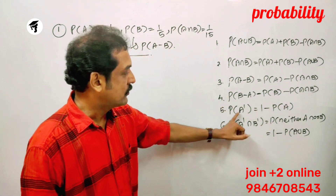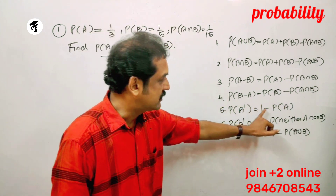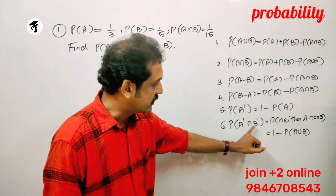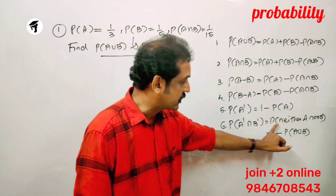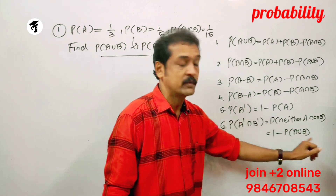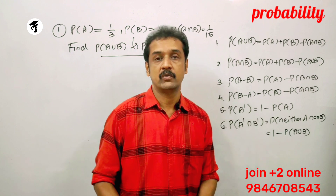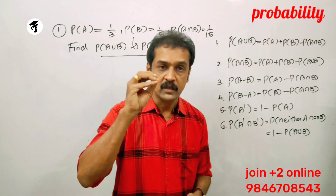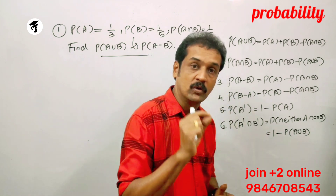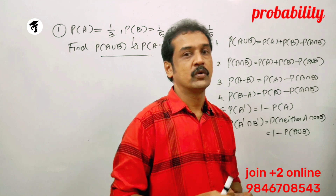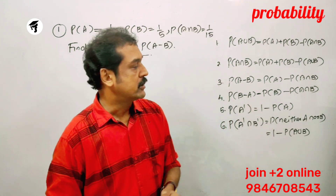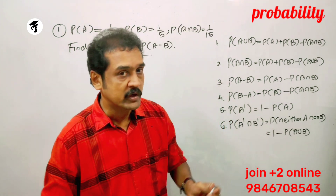Next, P of A complement is equal to 1 minus P of A. And P of neither A nor B is equal to 1 minus P of A union B. We will learn all these formulae.